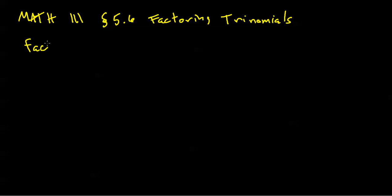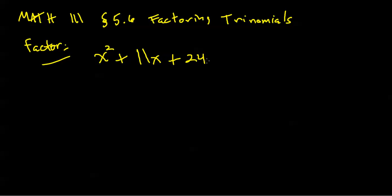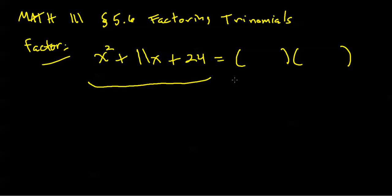Let's jump right in and I'll give you an example of what I mean by factoring trinomials. If I ask you to factor x squared plus 11x plus 24, I claim I can break this down and factor it as a product of two binomials. Often, but not always, a trinomial can be broken down into a product of two binomials. We discover this breakdown through a trial and error process. If I pick my first terms as x's, x times x is x squared when I multiply these binomials.